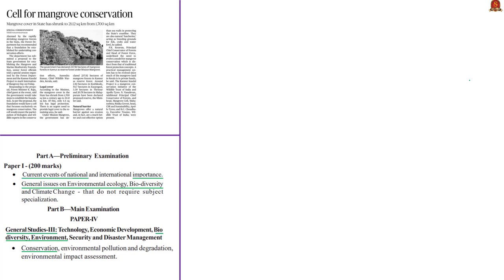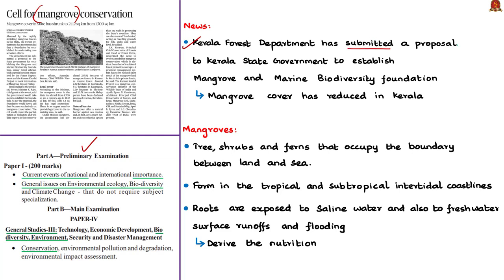The next article is about the declining mangrove cover in the state of Kerala. The article states that the forest department of Kerala has submitted a proposal to the state government for establishing the Mangrove and Marine Biodiversity Foundation, which will help undertake conservation efforts of mangrove forests in Kerala, as the mangrove cover has largely reduced. This proposal was submitted in a special session to celebrate International Mangrove Day, organized by the forest department and the Kannur Kandal project.